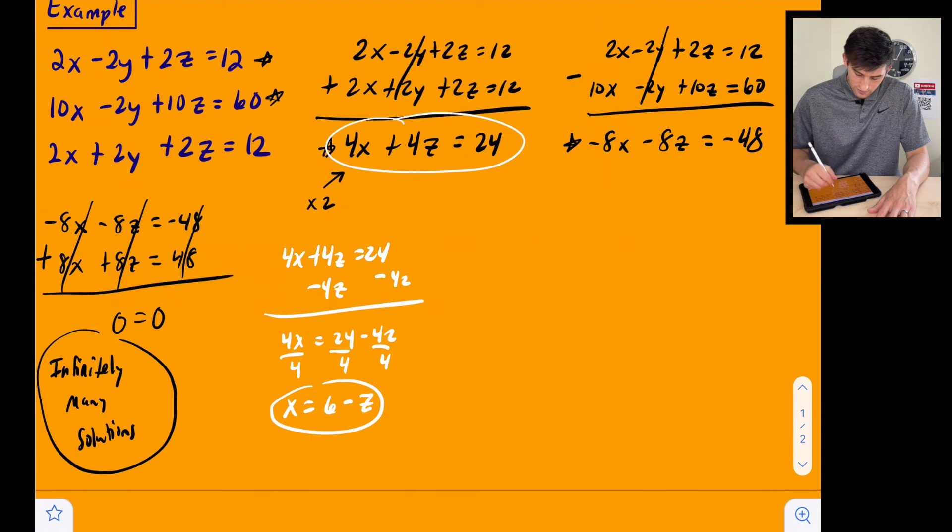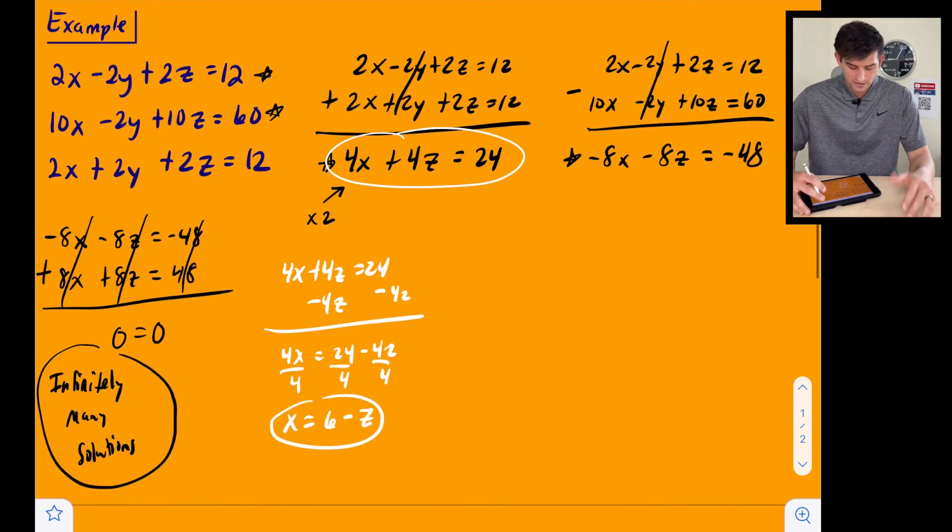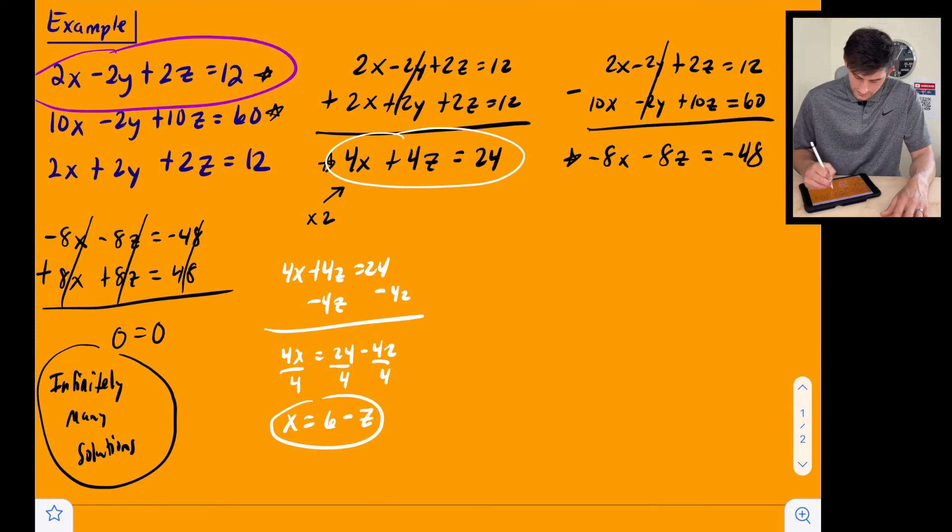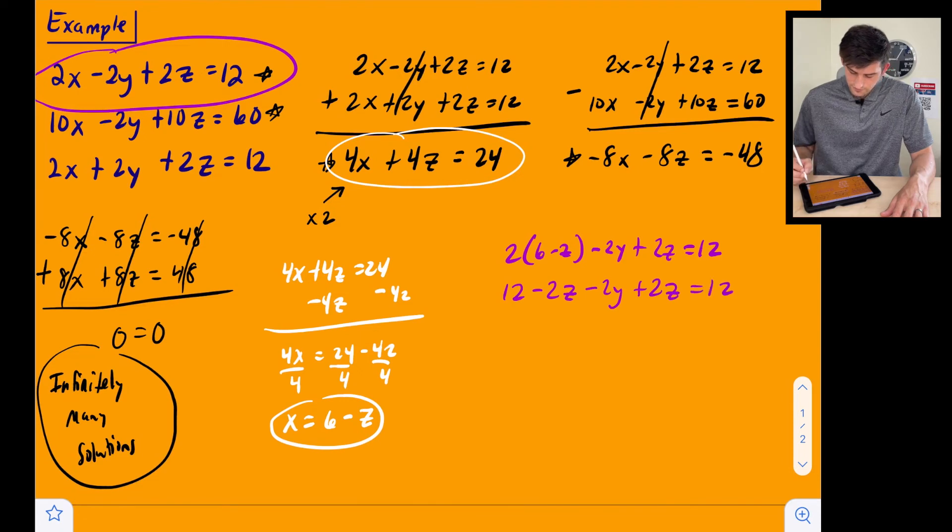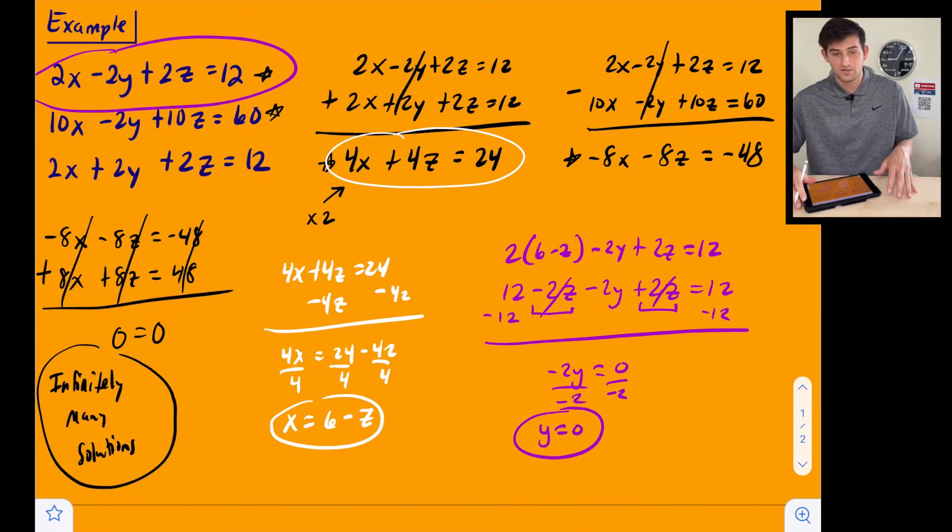...and let's plug that into the equation that we had just circled there for one of our variables. Actually, you know what? Let's take that into our top equation up here. So let's write this as 2 times 6 minus z minus 2y plus 2z equals 12. So this is going to give me 12 minus 2z minus 2y plus 2z equals 12. And now we can combine some like terms here. Notice we have a negative 2z and a positive 2z. So those are both going to cancel. And if I subtract this 12 here, then all I have left is negative 2y is equal to zero. Now we could divide by negative 2 and we get y is equal to zero. So now we have x, we have y.